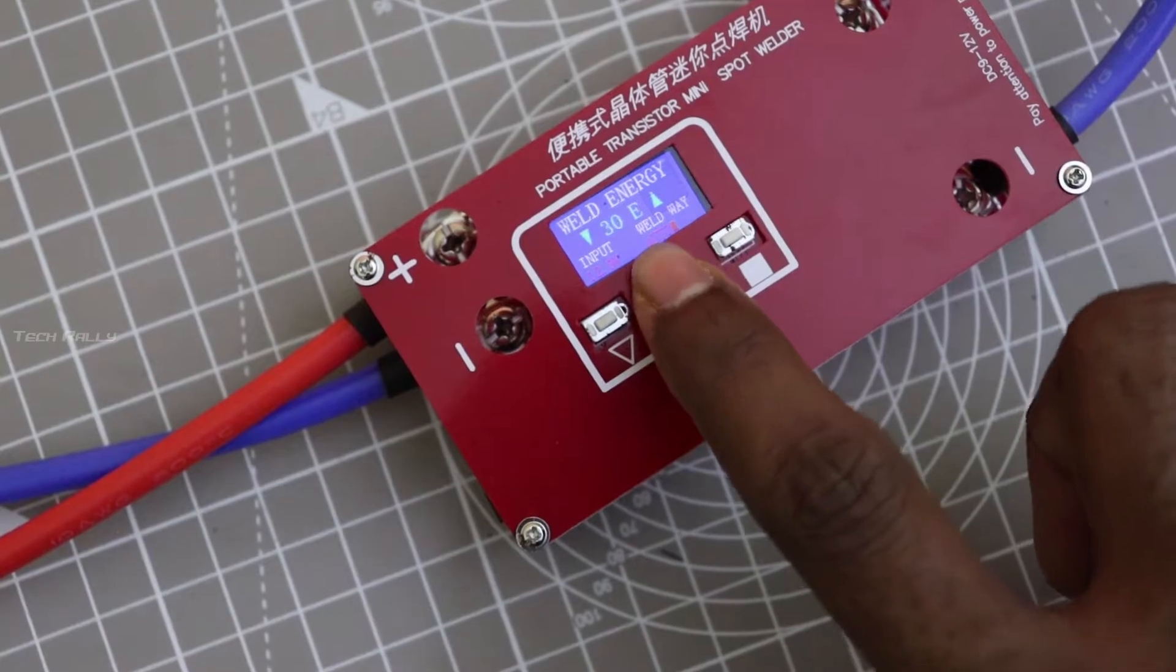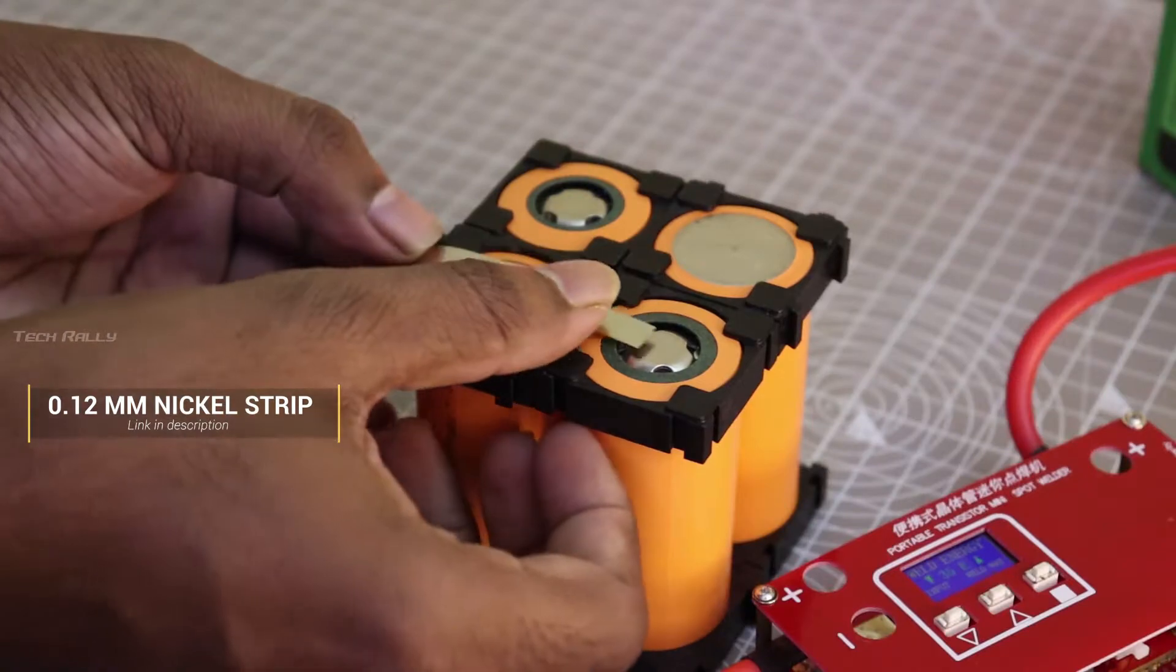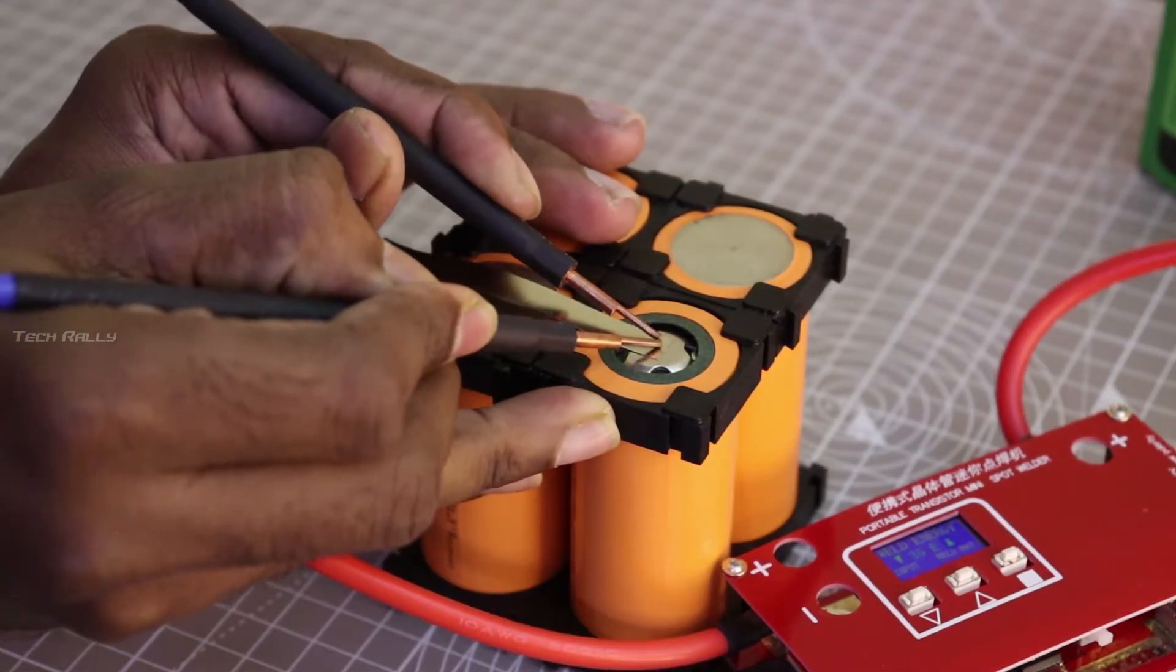I set the weld energy to 35E. I am going to use the 0.12mm nickel strip and I welded the batteries in series connection.